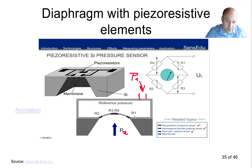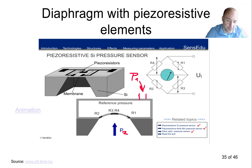R3 and R4 are in the middle of the diaphragm and R2 and R1 are on the sides. There is a nice animation on the referenced web page — I recommend playing with it. You will see how pressure changes, the deformation of the diaphragm, and the different resistances in the bridge.